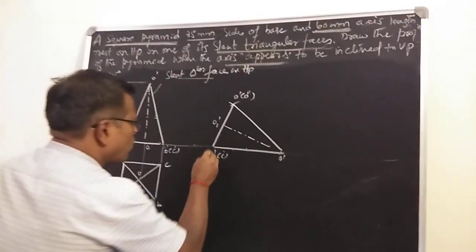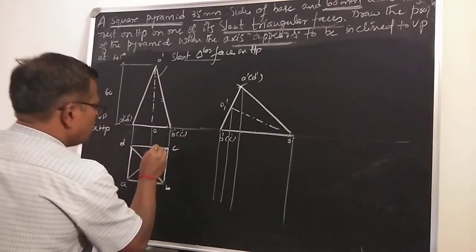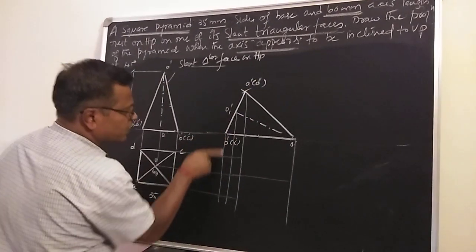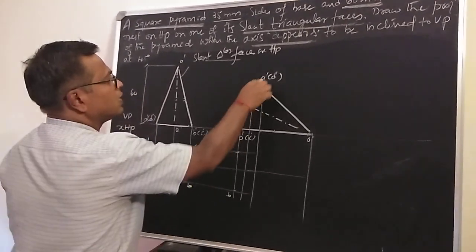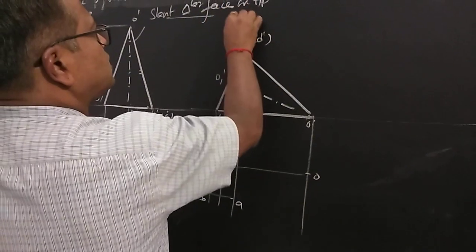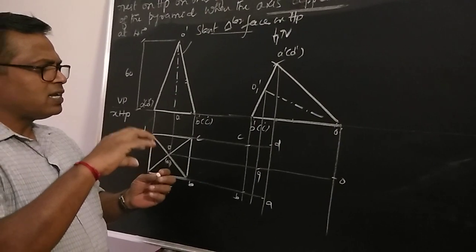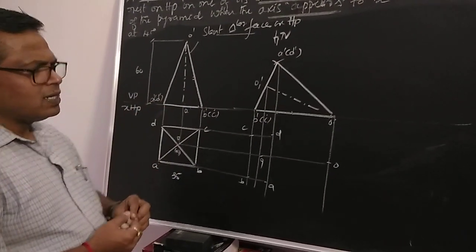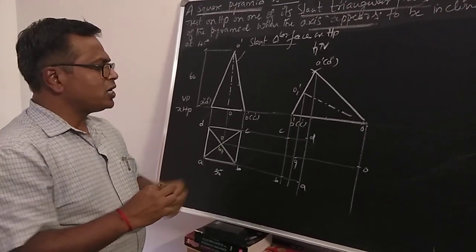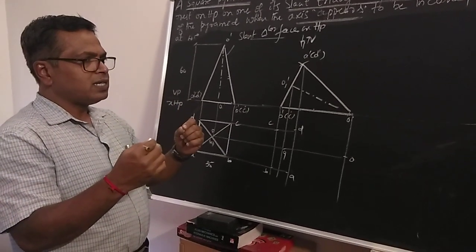With the slant face resting on HP, get the corresponding top view by drawing thin vertical projectors downward from all corners. Draw horizontal projectors from DC, from O1, and from AB. Identify the intersection points: B and C on their projectors, A and D on theirs, and O1 and O. Now identify visible and invisible edges — visible edges are shown by dark lines, invisible edges by dotted lines.